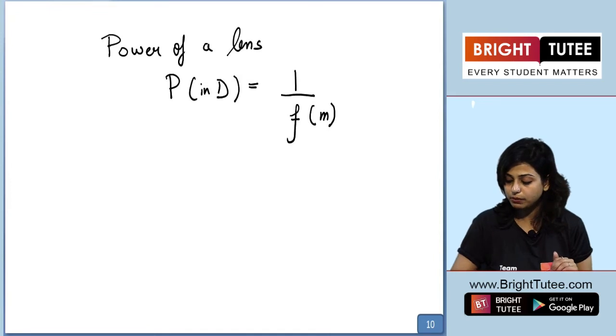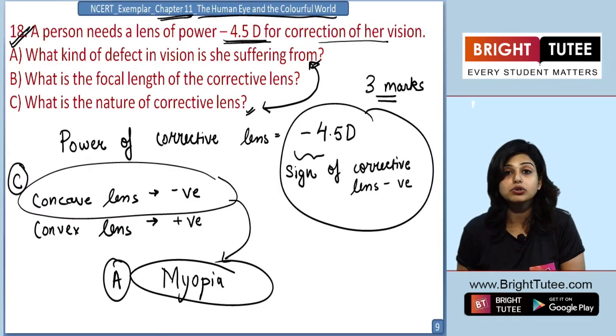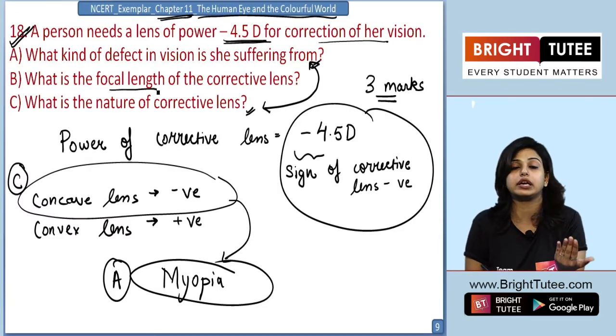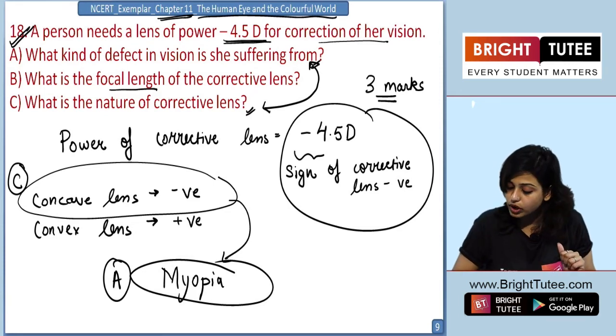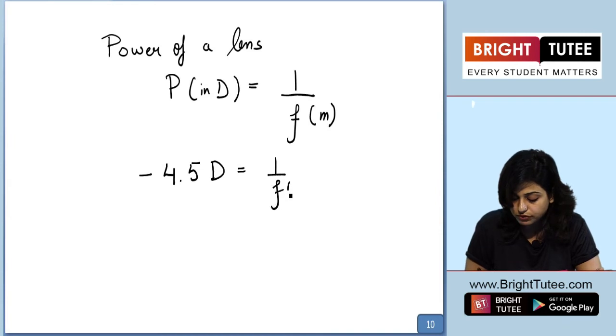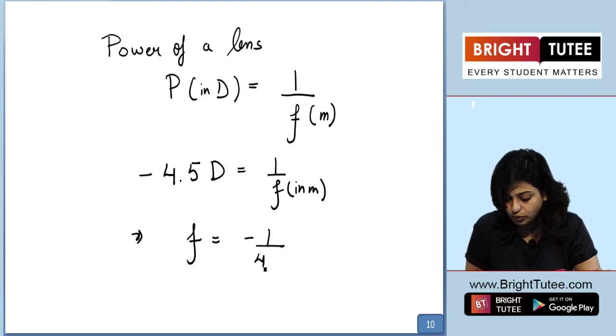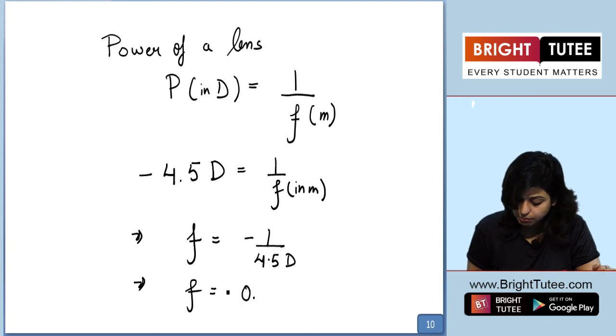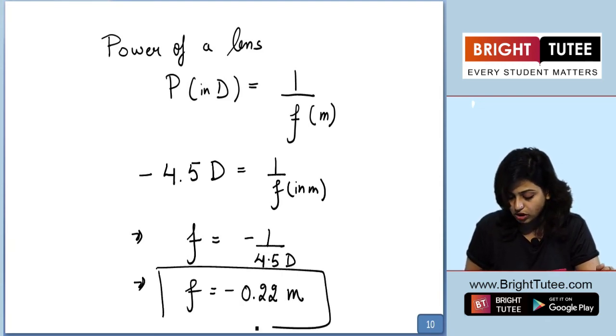In this case, we need to find the focal length of the corrective lens. We know the power, so we just put the value: minus 4.5 diopters equals 1 upon f in meters. We can write f equals minus 1 upon 4.5 diopters. The answer comes out to be minus 0.22 meters.